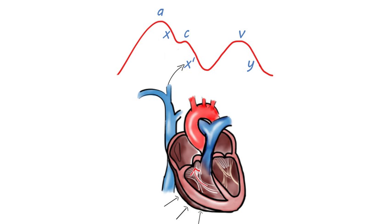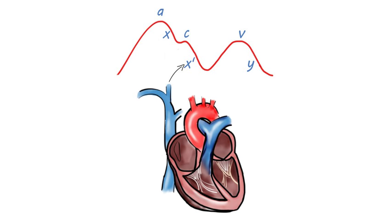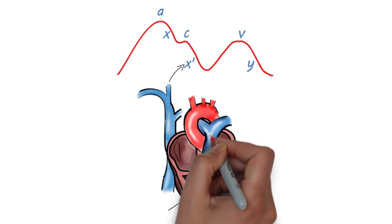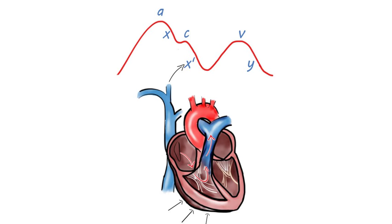X' corresponds with ventricular contraction. As the ventricles contract in systole, it drags the pressure down with it, causing a downward displacement of the tricuspid valve. This, in turn, decreases the pressure in the right atria.